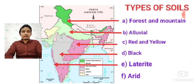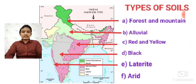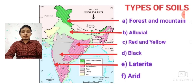First: forest and mountain soil. Forest and mountain soil is basically found in mountainous or hilly areas. You can follow the arrow and the green color shown on the map. It is basically found in the Jammu and Kashmir area, the northernmost part of West Bengal known as the Darjeeling area, and Arunachal Pradesh.